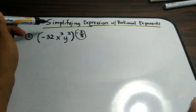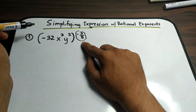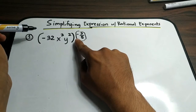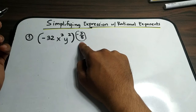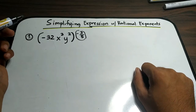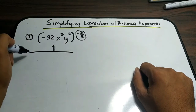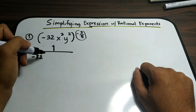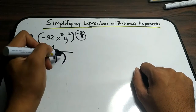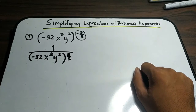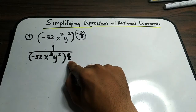This expression falls under expressions with rational exponents. If you notice, the exponent outside the parentheses is negative, so you need to make this exponent positive. You need to apply the negative exponent law or rule. To make it positive, you rewrite it as 1 over negative 32 x cubed y squared, raised to 3 over 5, since we moved the expression from numerator to denominator, making the exponent 3 over 5 positive.